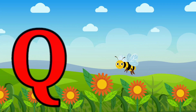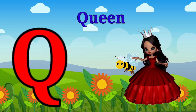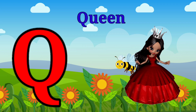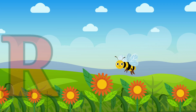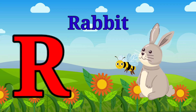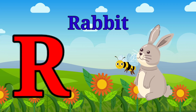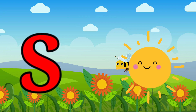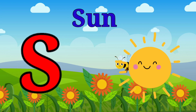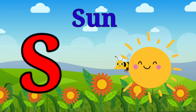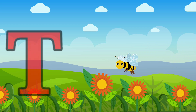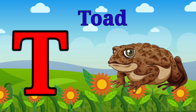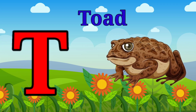Q is for queen, q-q-queen. R is for rabbit, r-r-rabbit. S is for sun, s-s-sun. T is for toad, t-t-toad.